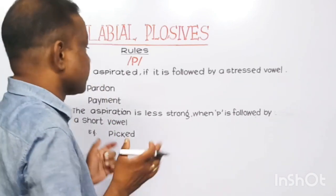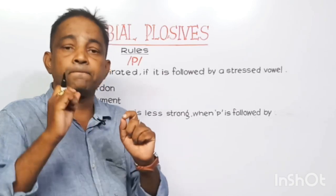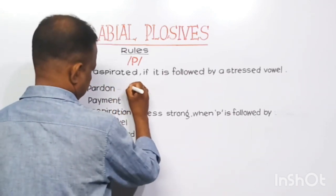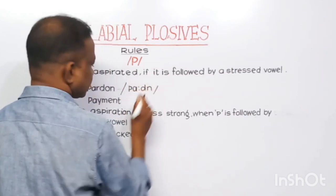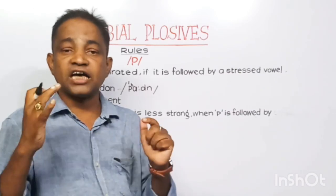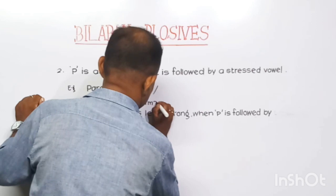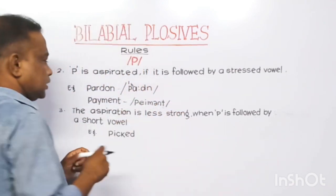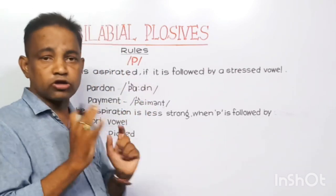Rule number two: /p/ is aspirated if it is followed by a stressed vowel. Aspirated means /p/ is pronounced as /pʰ/. When the vowel is accented or stressed, it is pronounced with aspiration — not as a plain /p/. WhatsApp people generally pronounce it with aspiration because it is accented or stressed.